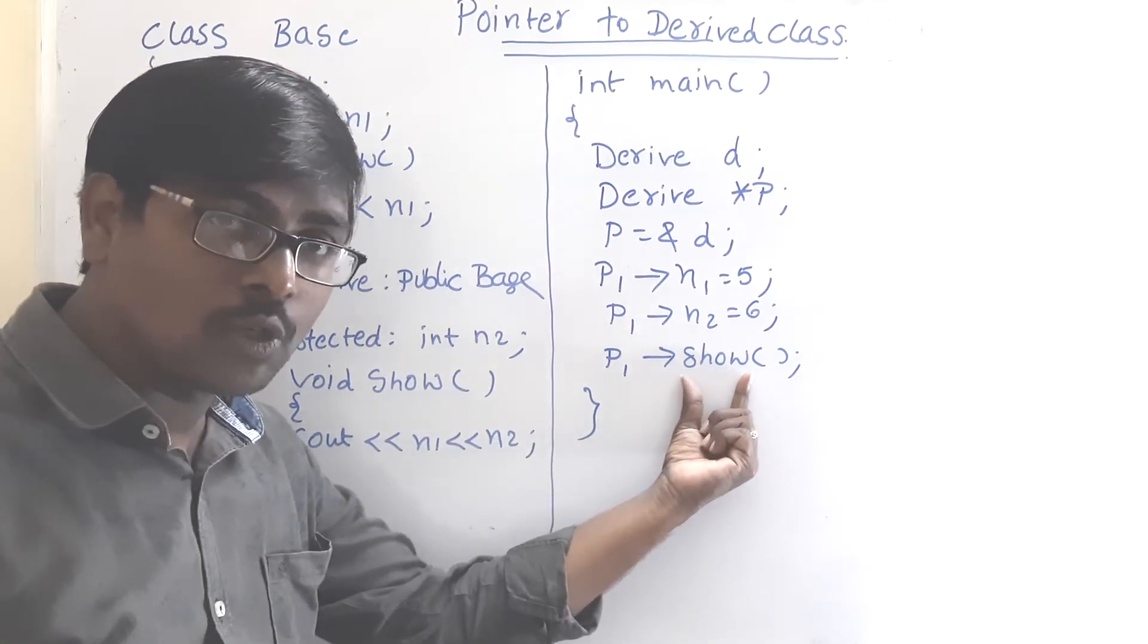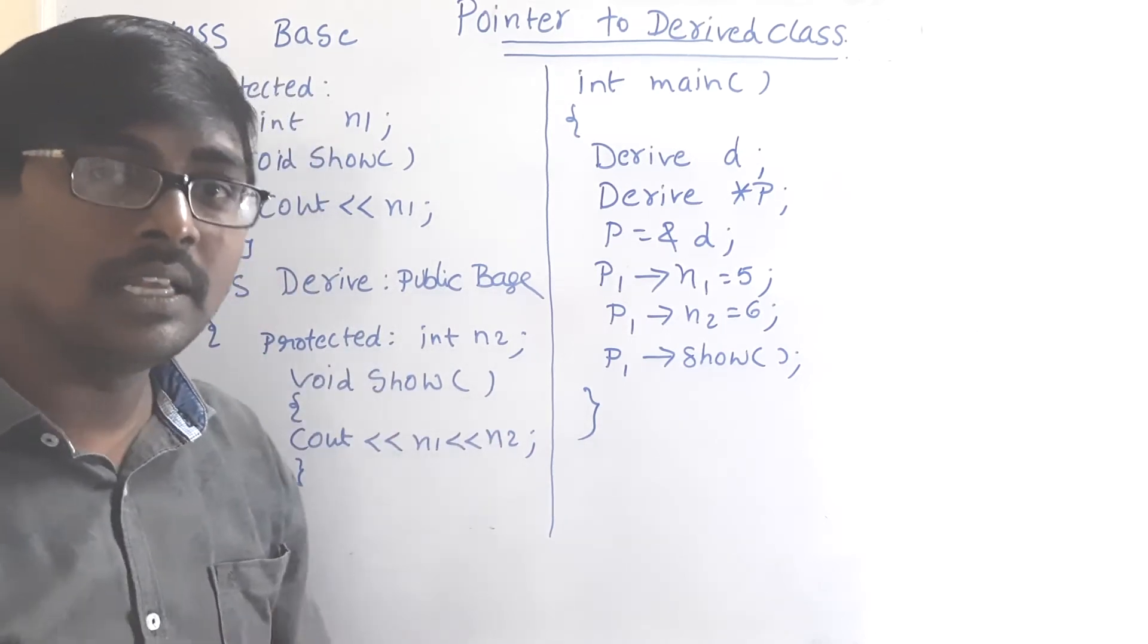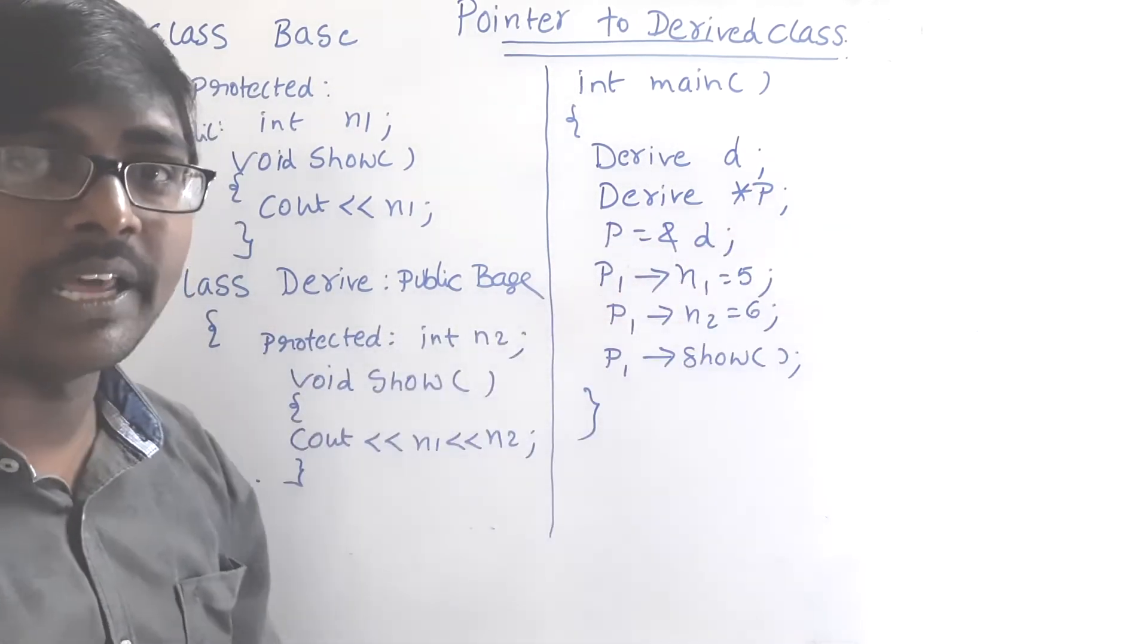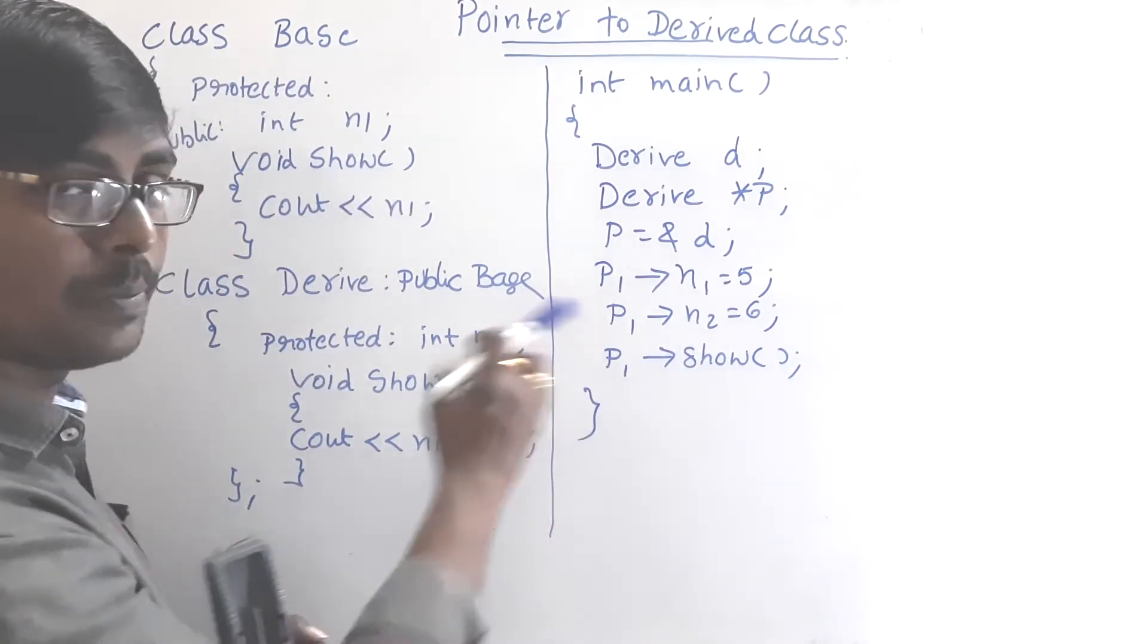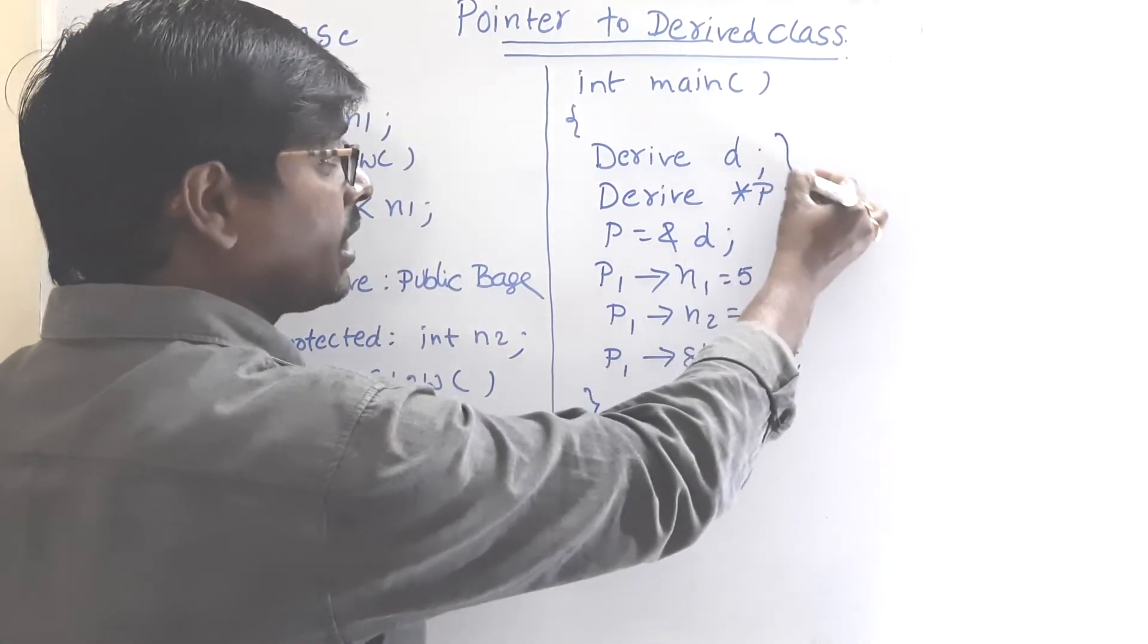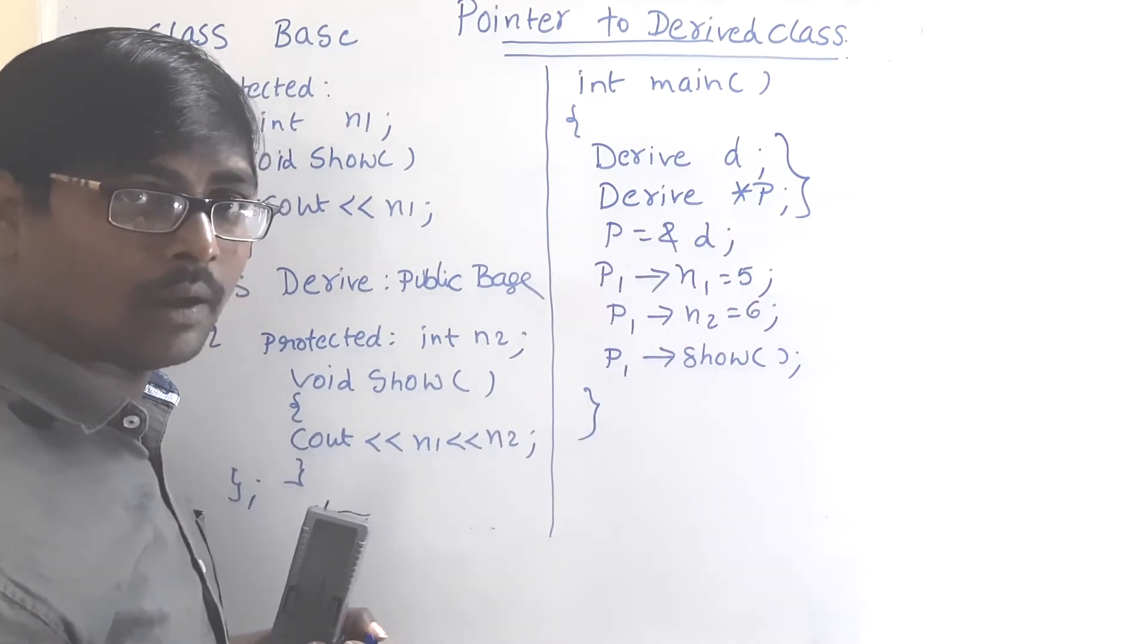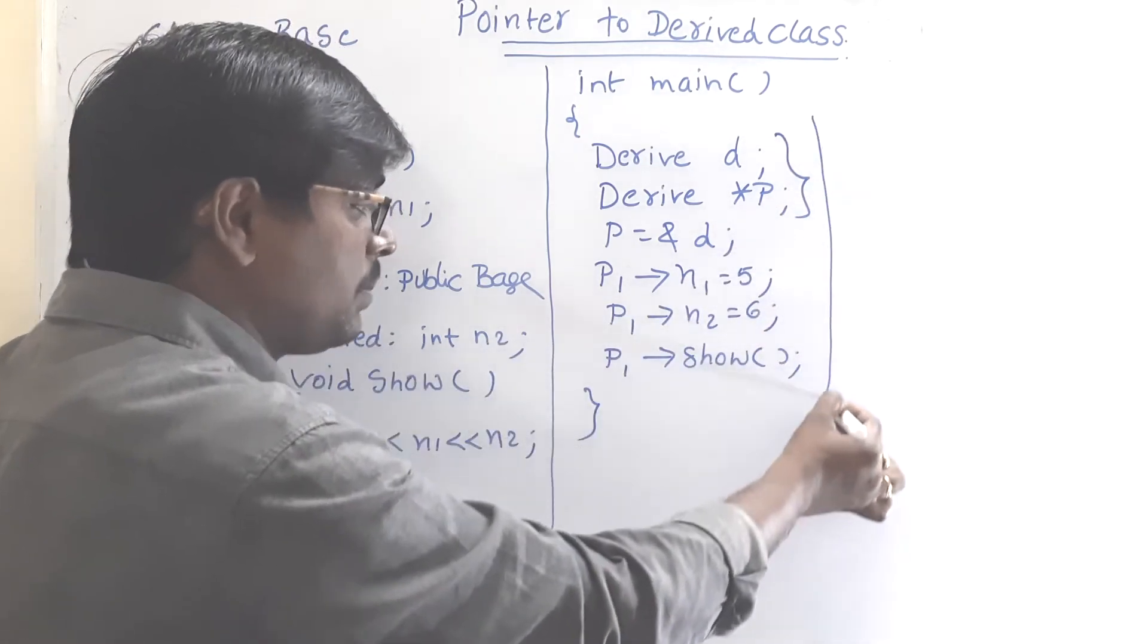If you are calling the show method, both parent class and child class both contain the show method. Which show method is executed? That is the important thing. Here the pointer is of type derived. Pointer is derived class type, so derived class show is executed. That is, 5 comma 6 is printed on the screen. So this is our required question. Pointer to the derived class and the pointer holds object address of the derived class. Now the concept is completed, but I will explain some more points.